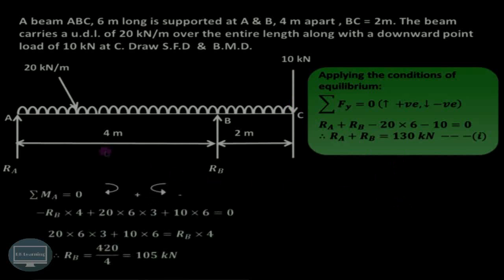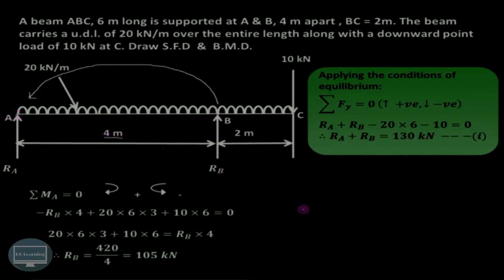Now we'll take the moment about point A. RB produces an anticlockwise moment about A, so minus RB, and the perpendicular distance from B to A is 4 meters, giving minus RB into 4. The UDL has a magnitude of 20 into 6 and acts at the center of the span, so this length will be equal to 3 meters.